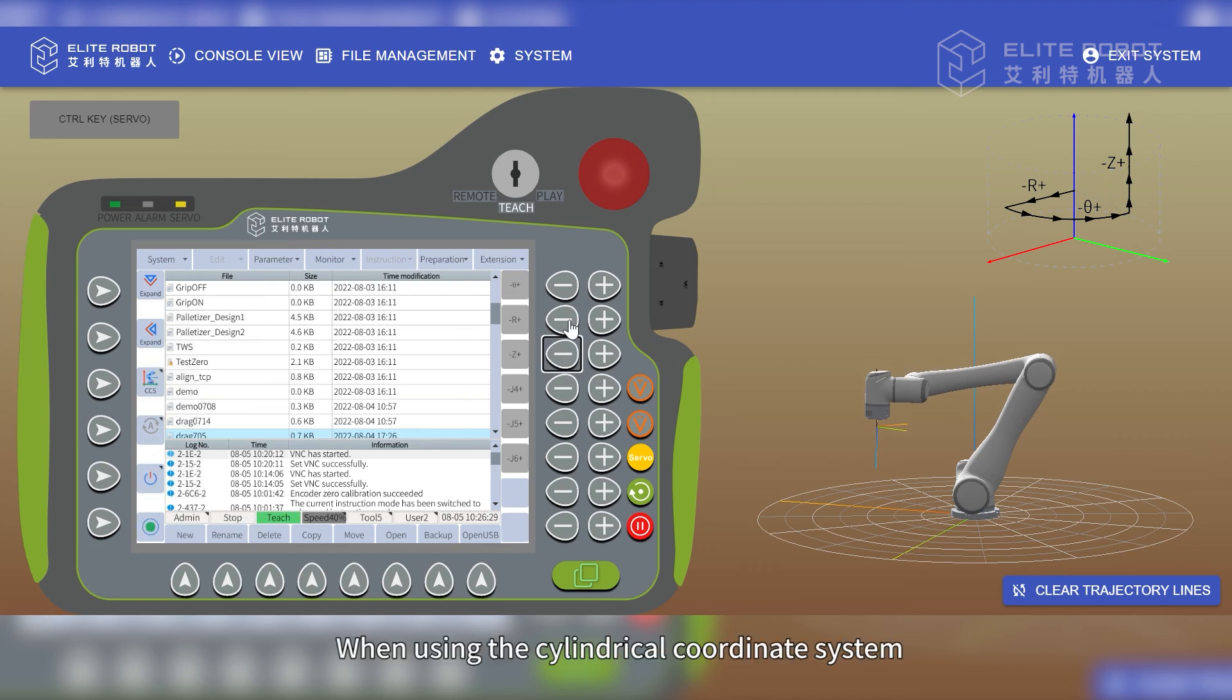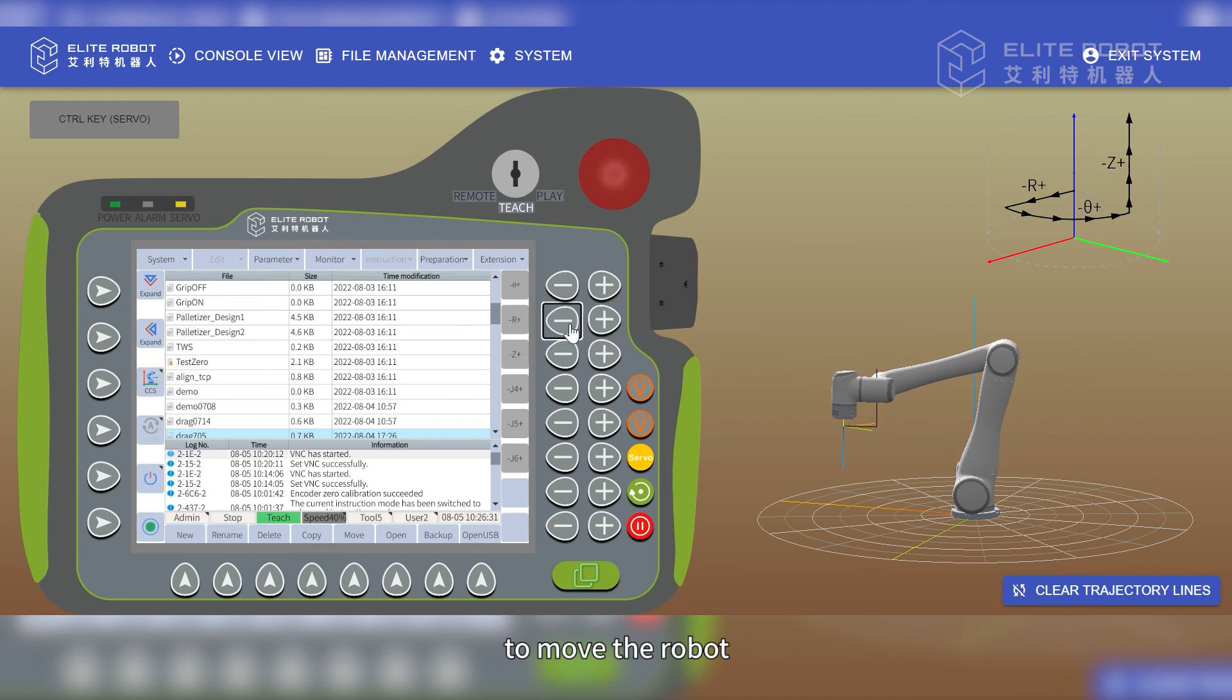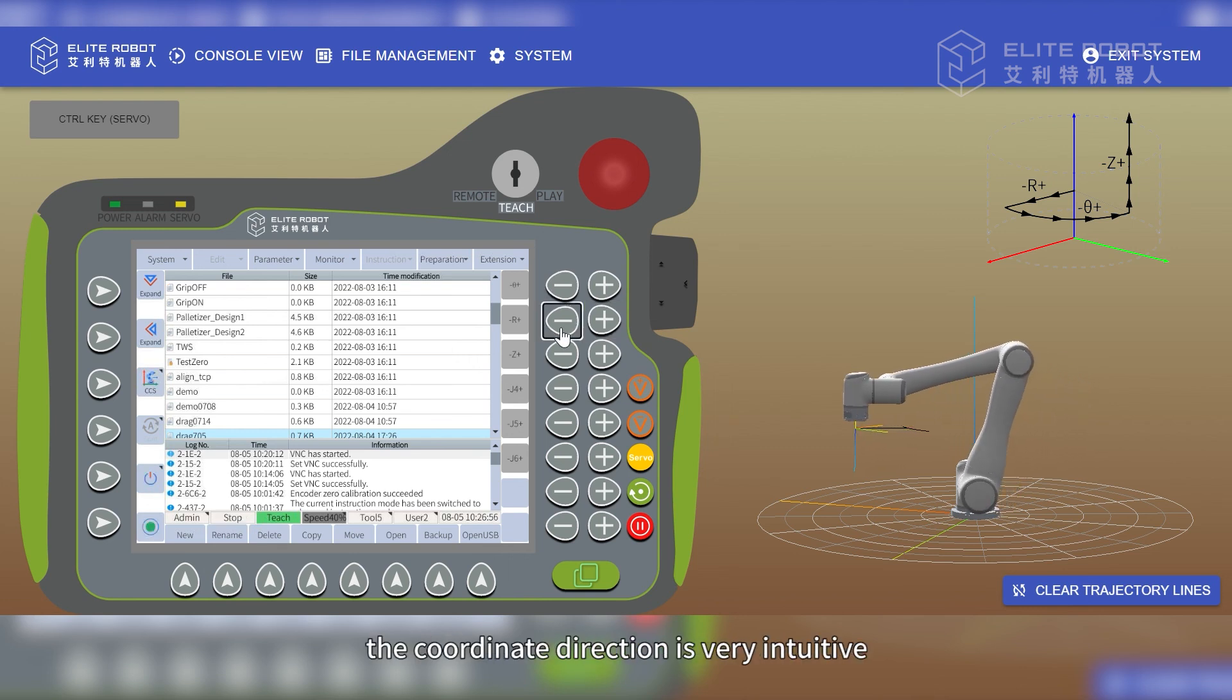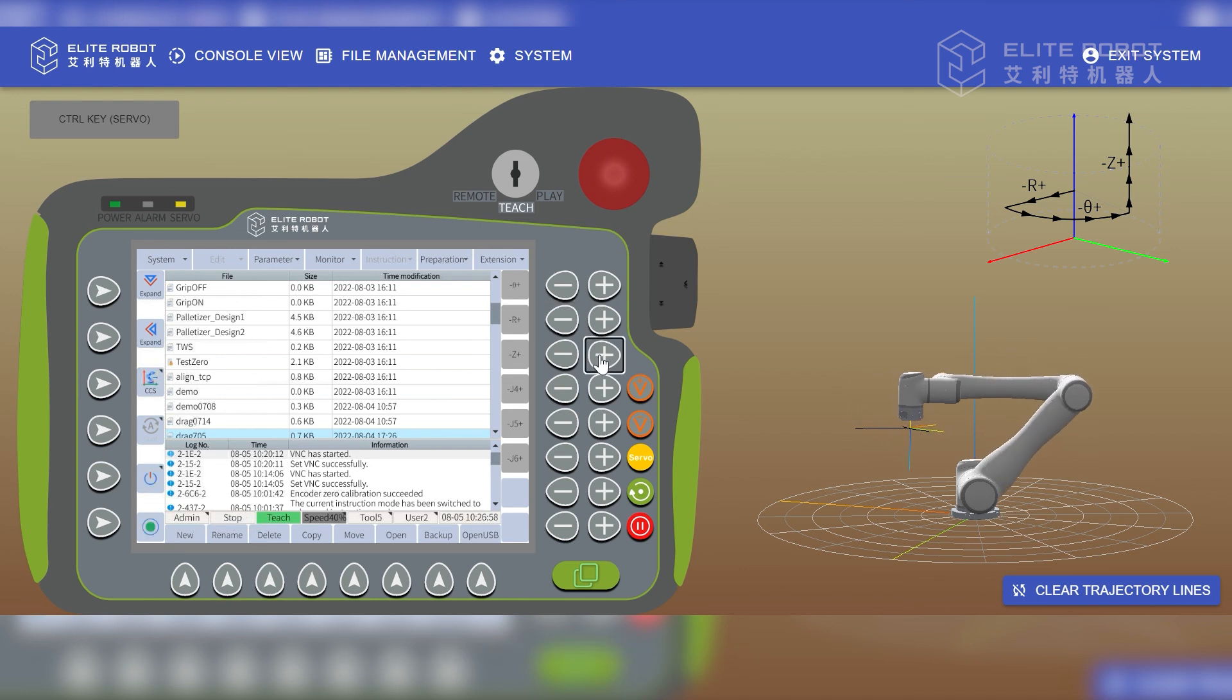When using the cylindrical coordinate system to move the robot, it is very intuitive to make the robot move up and down using the positive z and minus z keys, or rotate around the center axis, which is your theta, or make the robot go straight forward or backwards from the current position, which is your r. When operating the robot manually, the movement trajectory of the coordinate direction is very intuitive.